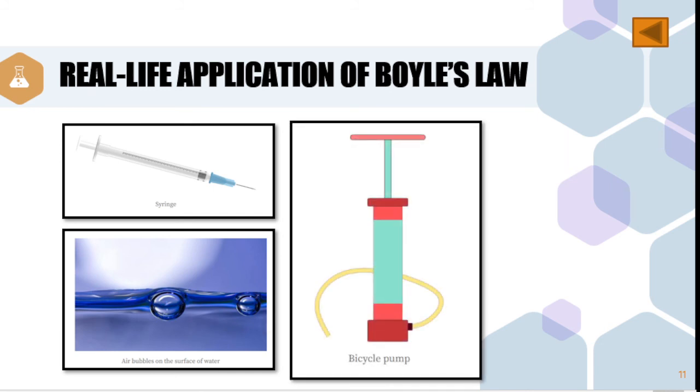Next application is the bicycle pump. A hand bicycle pump works similar to a syringe. When the handle of the pump is pushed down, the pressure inside the pump will increase momentarily. In other words, the gas inside is compressed. As a result, the pressurized gas is forced inside the tire of a vehicle.